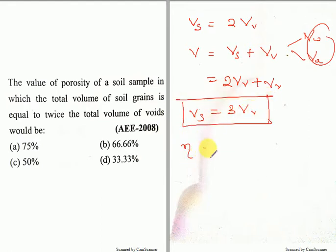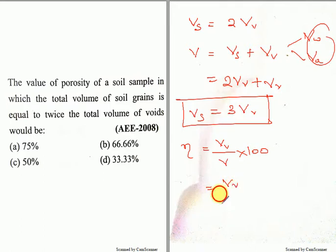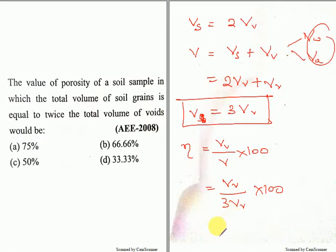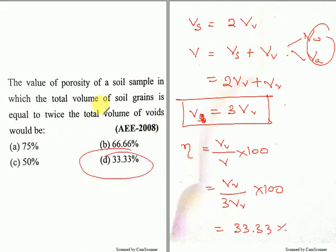We know the formula for porosity which is equal to volume of voids by total volume into 100. The total volume is equal to 3 times volume of voids. So porosity equals Vv divided by 3Vv, into 100. If you solve this equation you are supposed to get the answer as 33.33 percent, so option D will be the right answer. Just by using common sense and basic formulas we can calculate this.